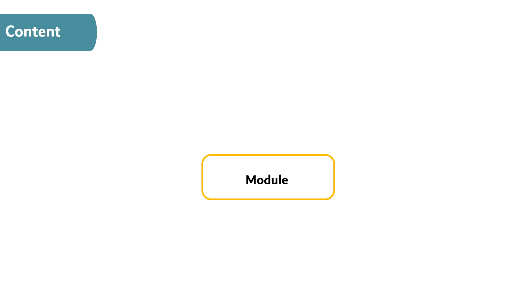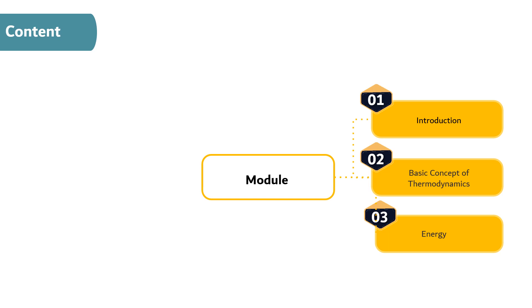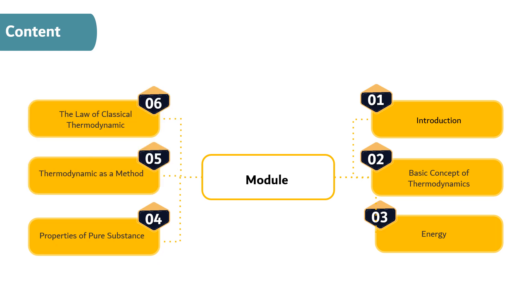The content of this course consists of 16 modules. The first module is Introduction. The second module is Basic Concept of Thermodynamics. The third module is Energy. The fourth module is Properties of Pure Substance. The fifth module is Thermodynamic as a Method. The sixth module is The Law of Classical Thermodynamics, followed by Creative Presentation and Midterm Examination.